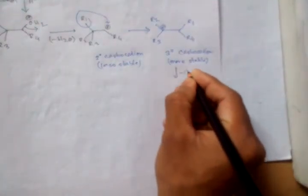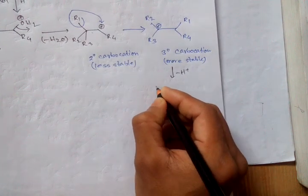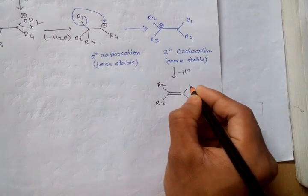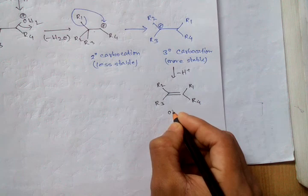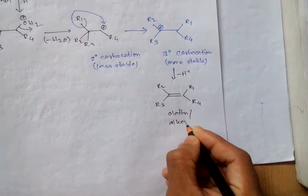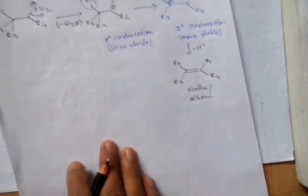3 degree carbocation. After removing H+, we get olefin or alkene structure.